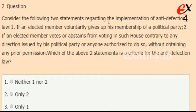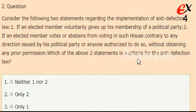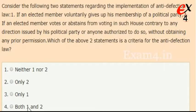Consider the following two statements regarding the implementation of the anti-defection law. Statement 1: if an elected member voluntarily gives up his membership of a political party. Statement 2: if an elected member votes or abstains from voting in such house, contrary to any direction issued by his political party or anyone authorized to do so, without obtaining any prior permission. Which of the above two statements is a criteria for the anti-defection law? Options: neither 1 nor 2, only 2, only 1, or both 1 and 2. The right answer is option 4, both 1 and 2.